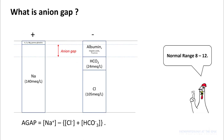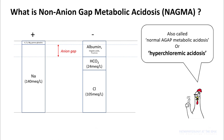In the previous lecture, we talked about anion gap. Anion gap was defined as sodium minus chloride plus bicarb. Non-anion gap metabolic acidosis is also called normal anion gap acidosis or hyperchloremic acidosis.